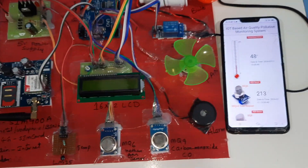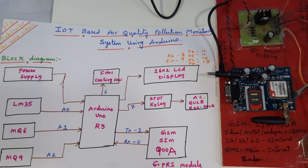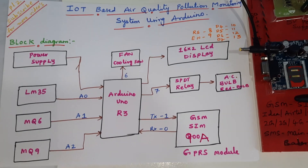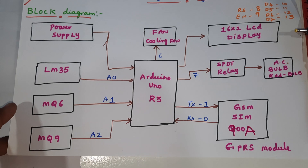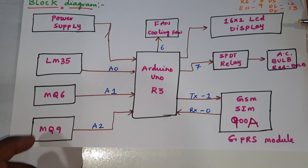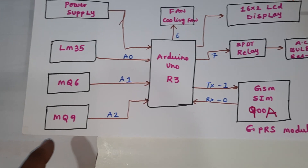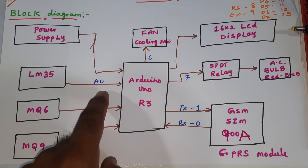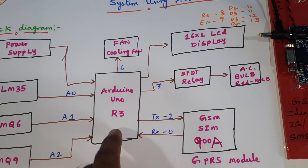Hi, we are from SVS Embedded. The project title is IoT-Based Air Quality Pollution Monitoring System using Arduino. In this project we are using three sensors: LM35 temperature sensor, MQ6 methane gas sensor, and MQ9 carbon monoxide sensor. These are connected to A0, A1, A2 analog inputs.